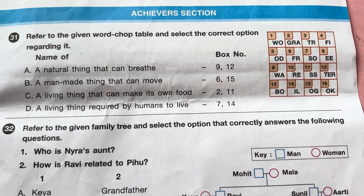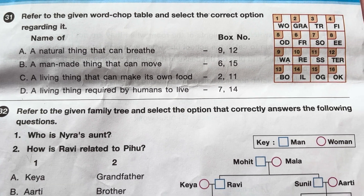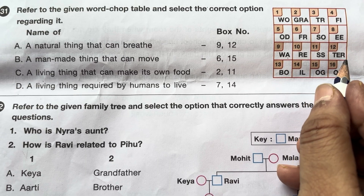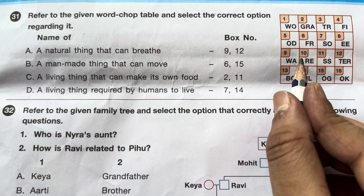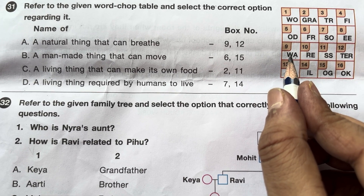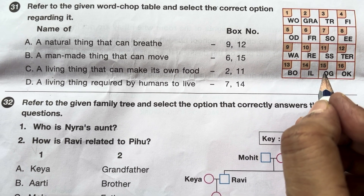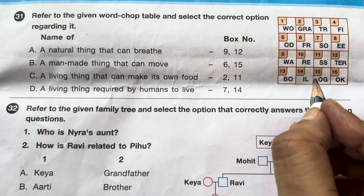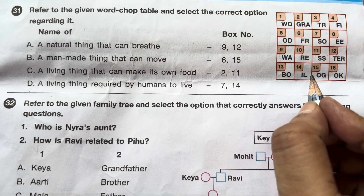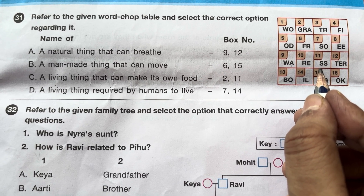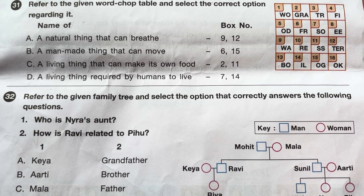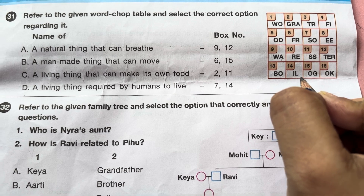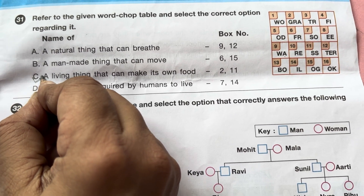Achievers section. Refer to the given table and select the correct option. A: a natural thing that can breathe — water cannot breathe, so A is incorrect. B: a man-made thing that can move. C: a living thing that can make its own food — grass is a living thing and it can make its own food, so C is correct. D: a living thing required by humans to live — soil is not a living thing. So the answer is C.